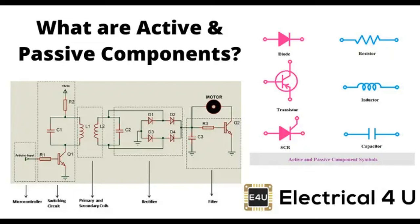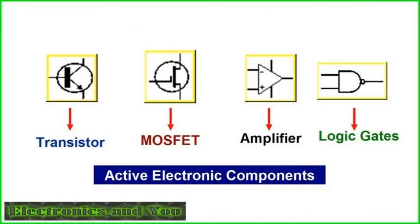Let's delve deeper into some specific passive components and their characteristics. Resistors are used to limit or control the flow of electric current in a circuit. They have a resistance value, measured in ohms, which determines the degree to which they impede the current flow. Resistors come in various types, such as fixed resistors with a constant resistance, and variable resistors or potentiometers with an adjustable resistance.